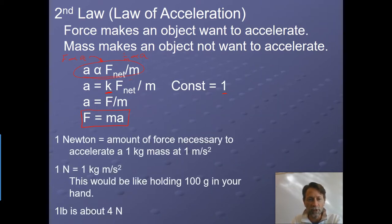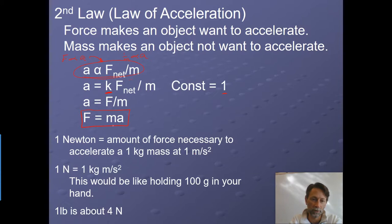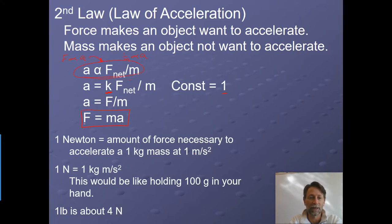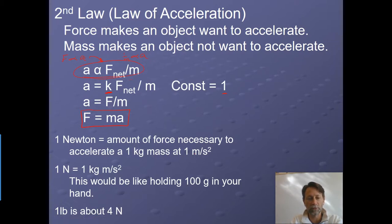The unit for force we have defined as the Newton, in honor of Sir Isaac Newton. It is the amount of force necessary to accelerate a one-kilogram mass at one meter per second squared. So one Newton is one kilogram·meter per second squared. It would be like holding 100 grams in your hand. Or if you're familiar with pounds, one pound is about four Newtons, so one Newton is roughly a fourth of a pound.